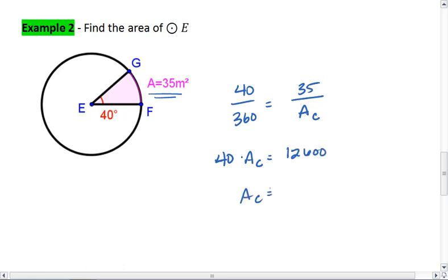The area of the circle then is 12,600 divided by 40, which is 315 meters squared. And that's it.